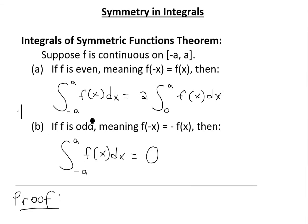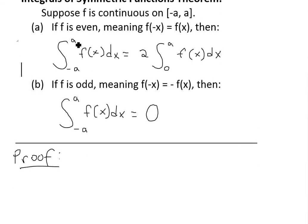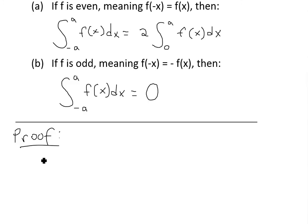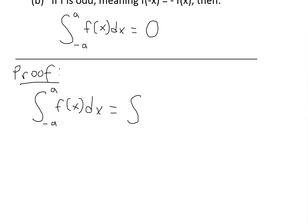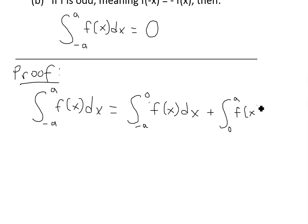The proof is pretty straightforward. We break up the integral from negative a to a of f(x) dx into two parts: the integral from negative a to zero of f(x) dx, plus the integral from zero to a of f(x) dx. Now we can flip the negative a to the top and put zero on the bottom — we just put a negative sign.